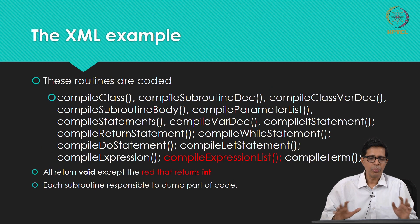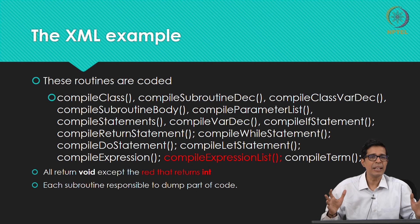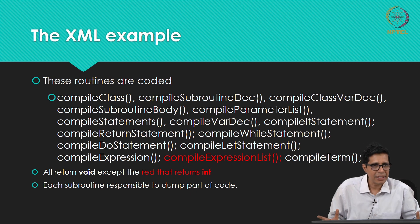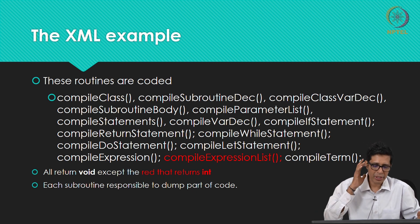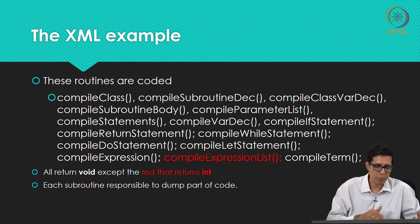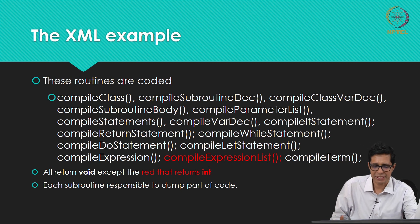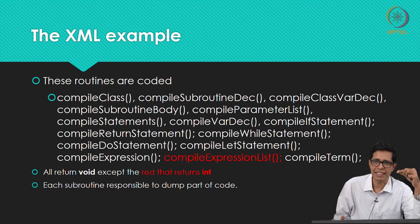This is an XML-guided compilation. As part of the previous project module, the JAG file was taken, tokenized, analyzed, and an XML file was created. Now the current compiler will use that XML file.